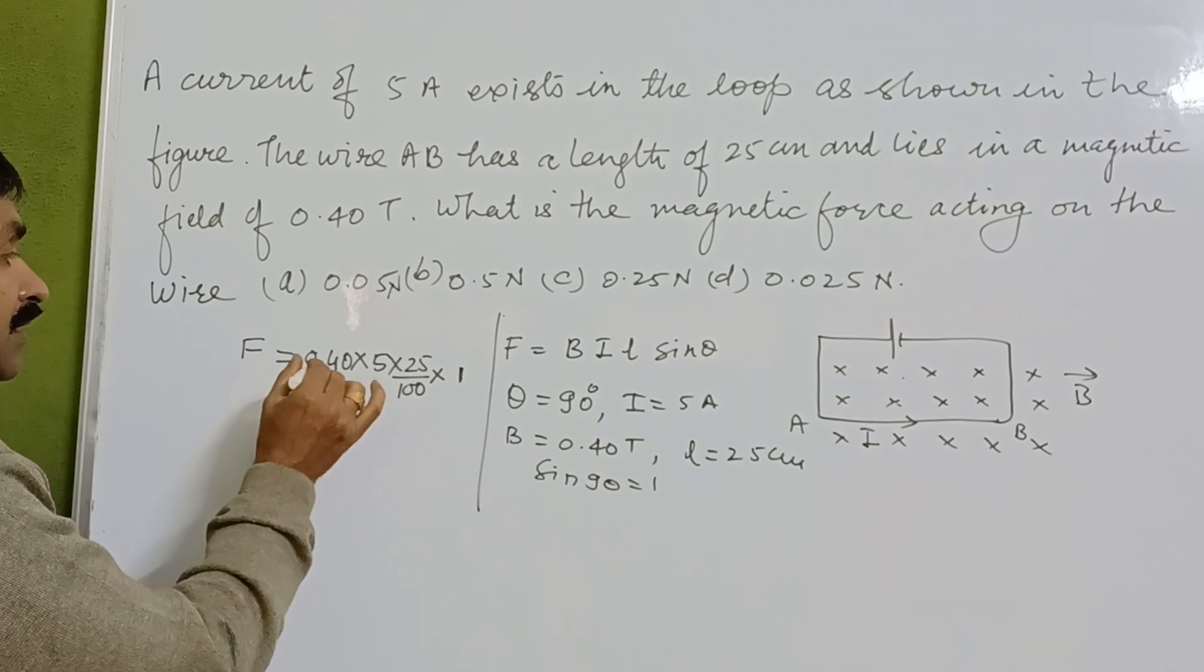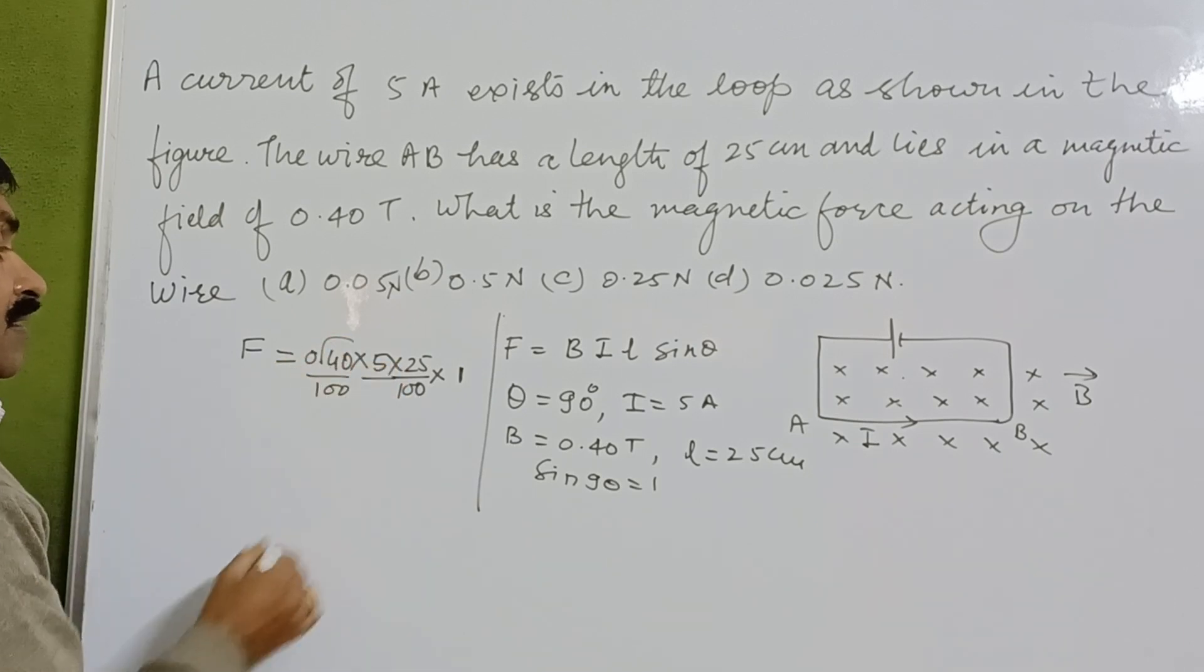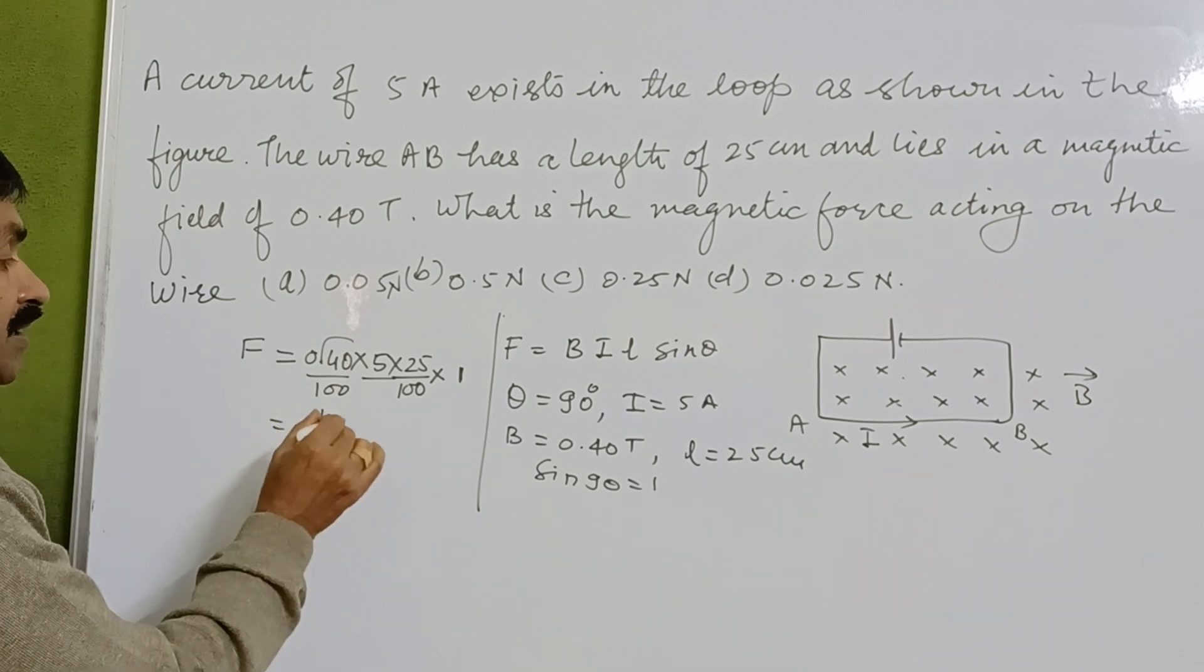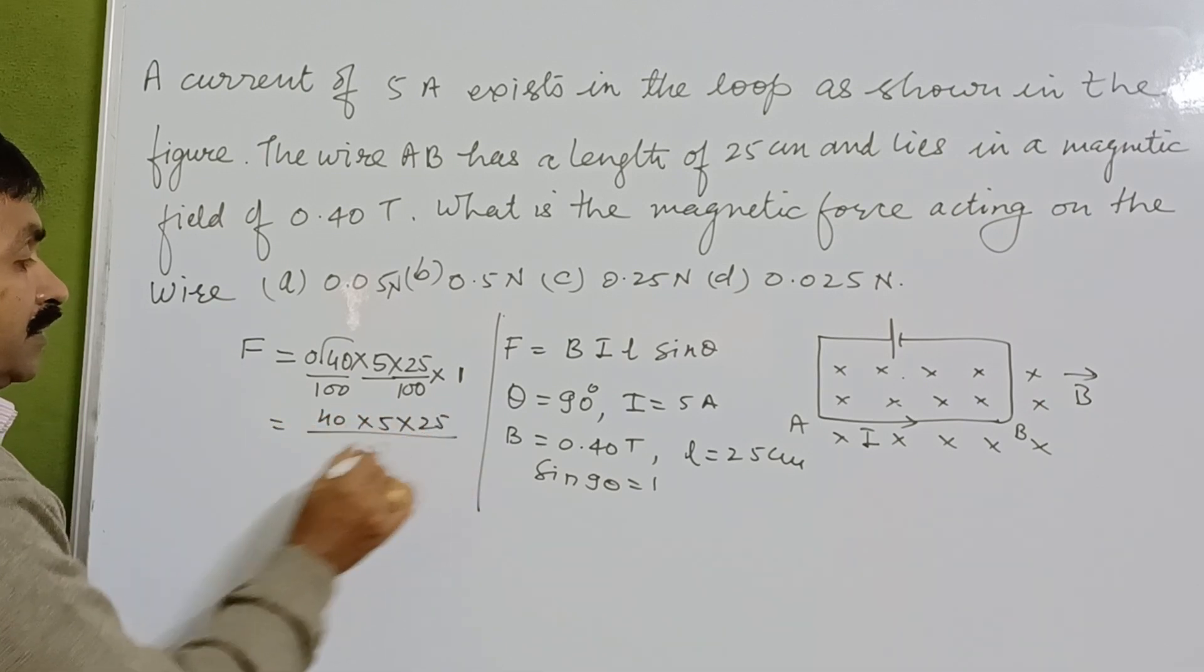Now for the calculation: F = 0.40 × 5 × 25/100